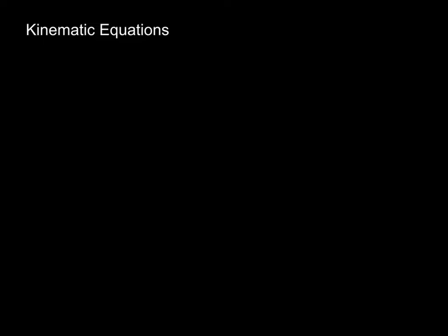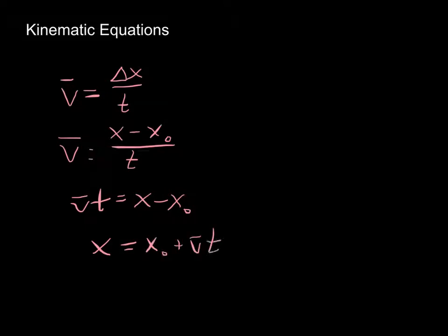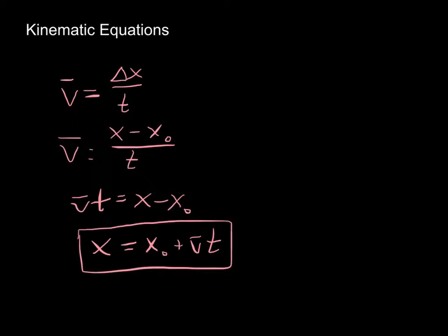Our first kinematic equation starts with our definition for average velocity: average velocity equals displacement over time, which equals our final position x minus x₀, our original position, divided by time. Rearranging to solve for x — multiply both sides by t, then add x₀ to both sides — we get x equals x₀ plus average velocity times time. This is useful if we want to figure out how far we've gone if we know where we started, what our average velocity was, and how long we traveled.